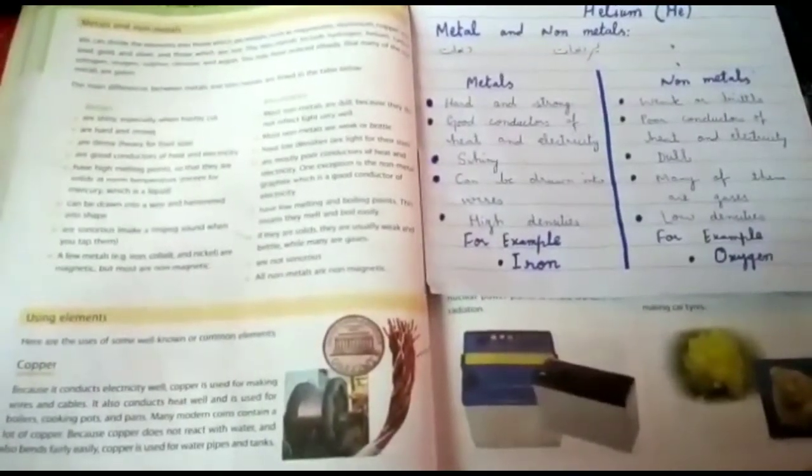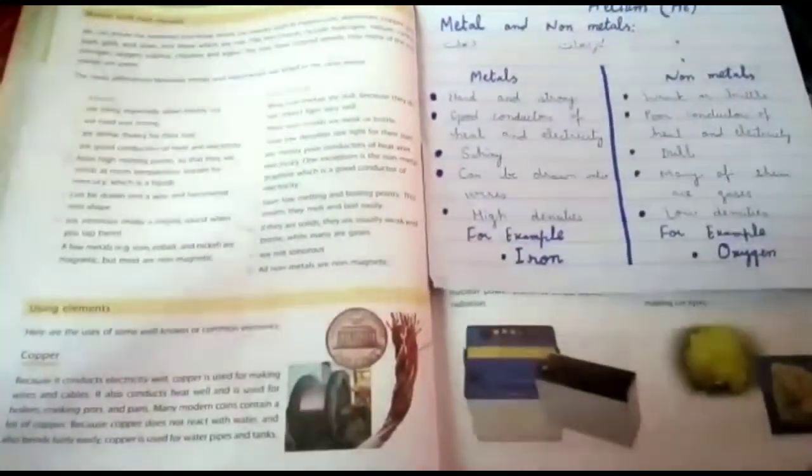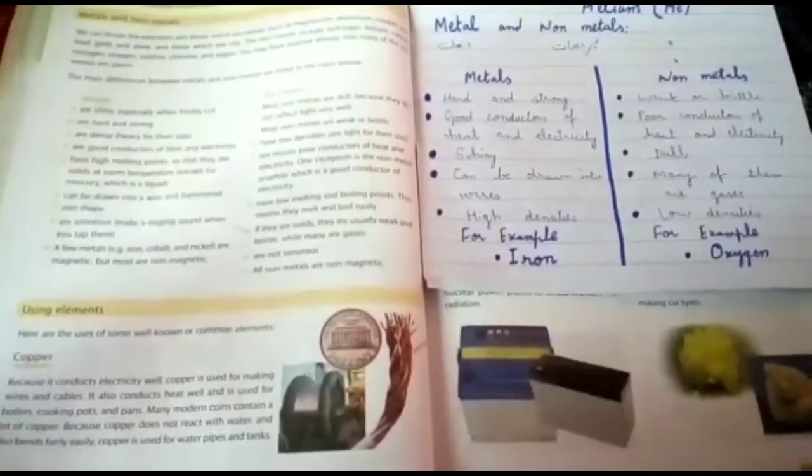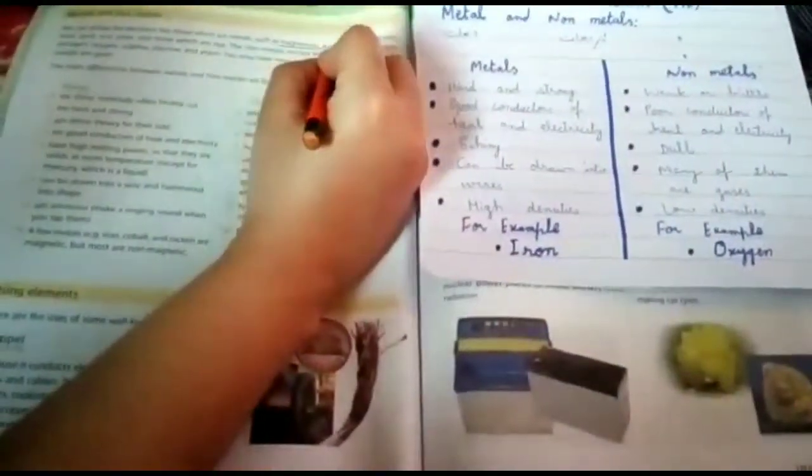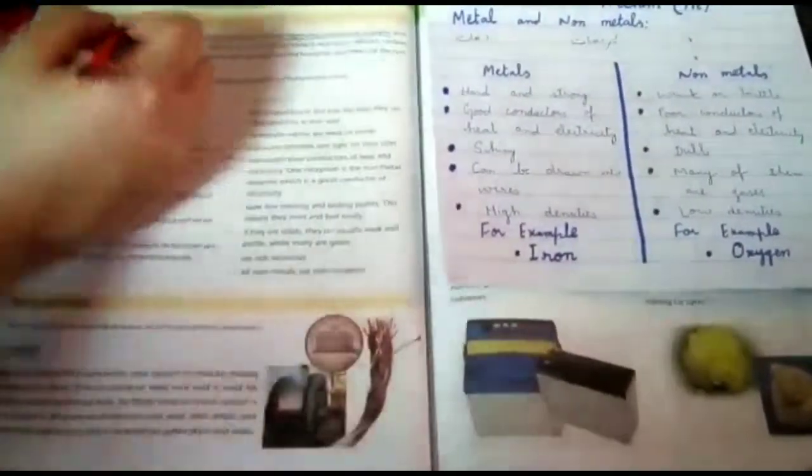For example, I will tell you: iron (loha), you can underline it, magnesium, aluminum, copper, zinc, lead, gold and silver. These are all metals.